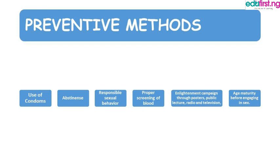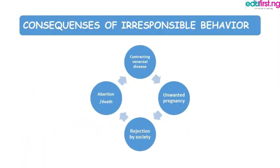Another preventive method is enlightenment through campaigns, posters, public lectures, radio and television. Most people are ignorant about STIs and as a result do anything carelessly, only to find out later that they have contracted these diseases — with results that are not pleasurable. The last method is age maturity before engaging in sex — you must be fully mentally, physically, financially, and emotionally ready before engaging in sexual intercourse.